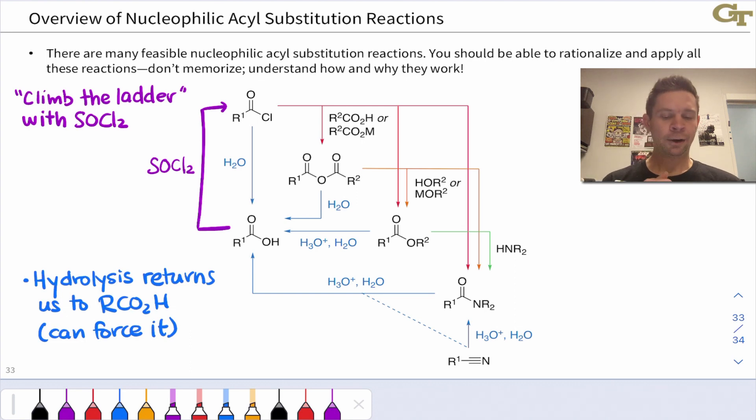Now, how do we get from the bottom of this reactivity ladder back up to the top? How do we even make acyl chlorides in the first place if, for example, all I've got to work with are amides or esters or carboxylic acids?